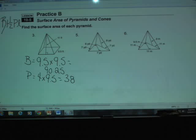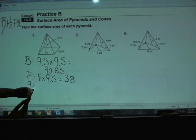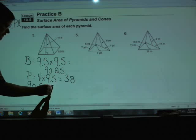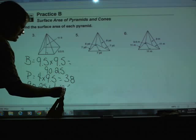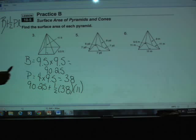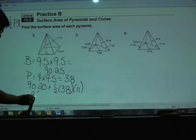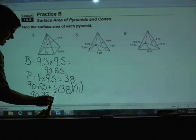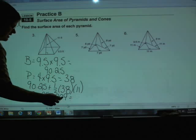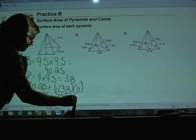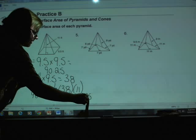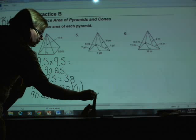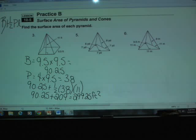And with that, we're ready to put in some numbers here. B number, 90.25, being added to 1 half times the P number, which is 38, times the slant height, which is 11. Half of 38 is something I can figure out. Half of 38 is 19, and 19 times 11 is 209. So this is 90.25 plus 209. 90.25 plus 209 changes into 299.25, and that's going to be feet squared. So that pyramid has a surface area of 299 and 1 quarter square feet.